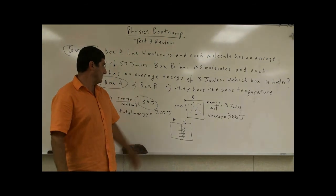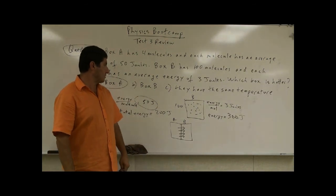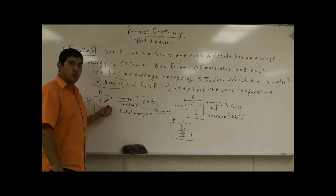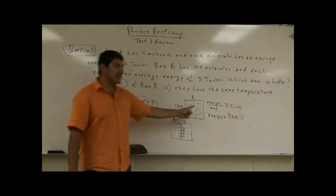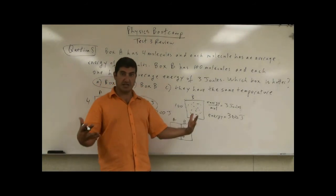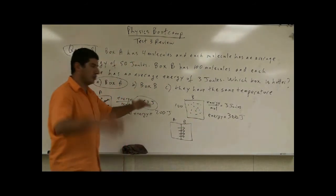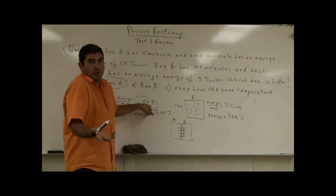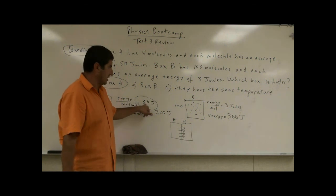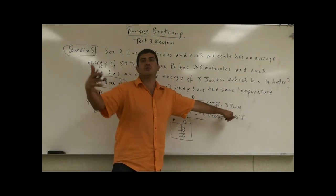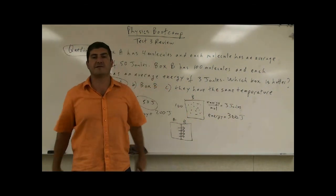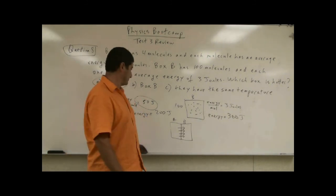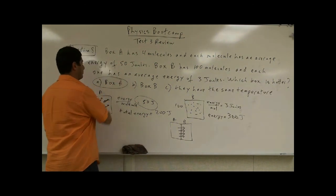Most likely what's going to happen, this one is going to go down quite a lot. That one is not going to be affected a lot because there's a lot of molecules. So this one is going to go way down until the average energy goes maybe 4 joules or 5 joules. And this one will go from 3 to 4 or 5, and then their final average energy per molecule should be the same. So the answer is therefore box A.